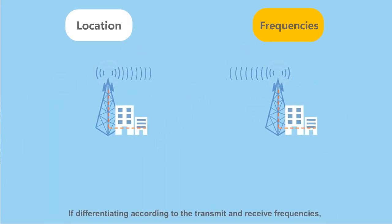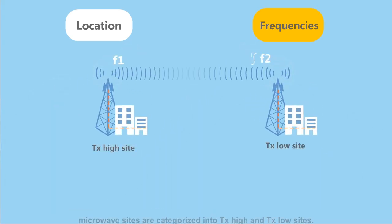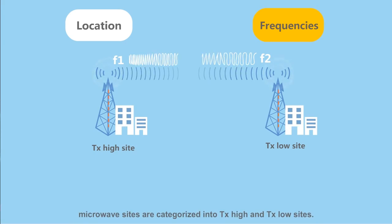If differentiating according to the transmit and receive frequencies, microwave sites are categorized into transmit high and transmit low sites.